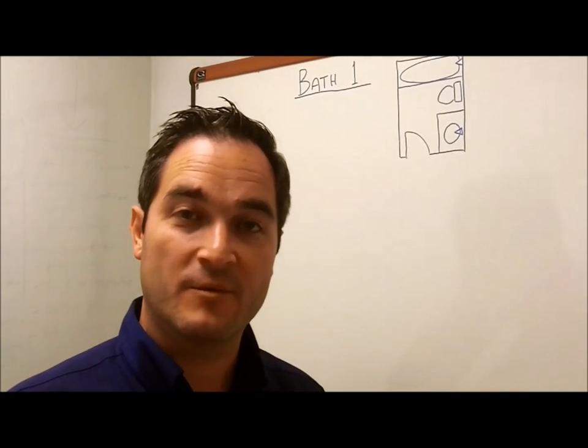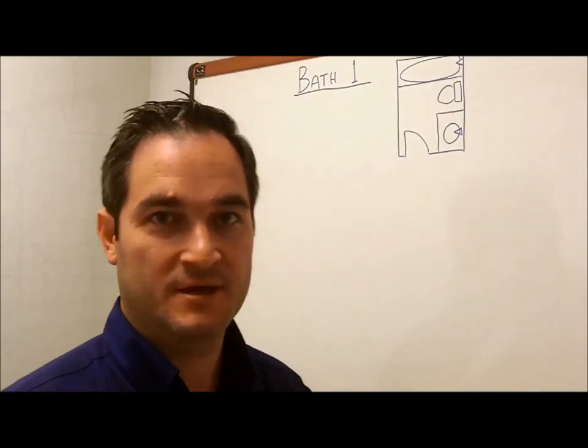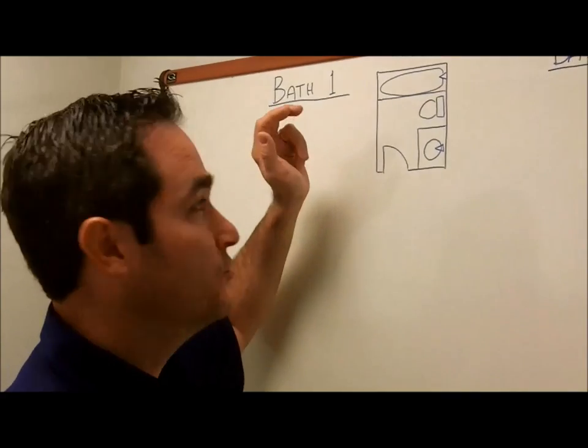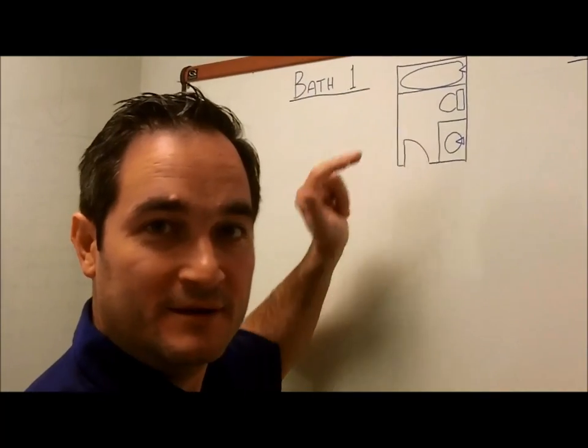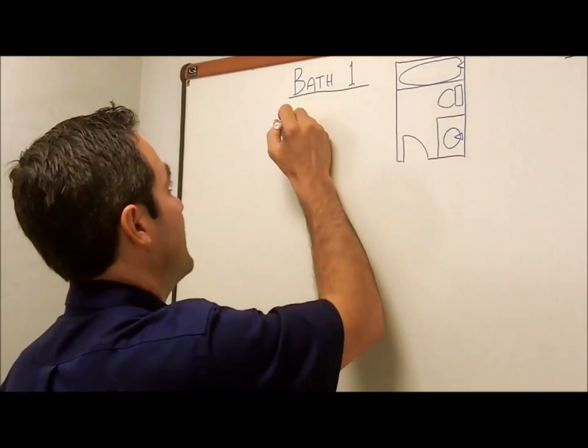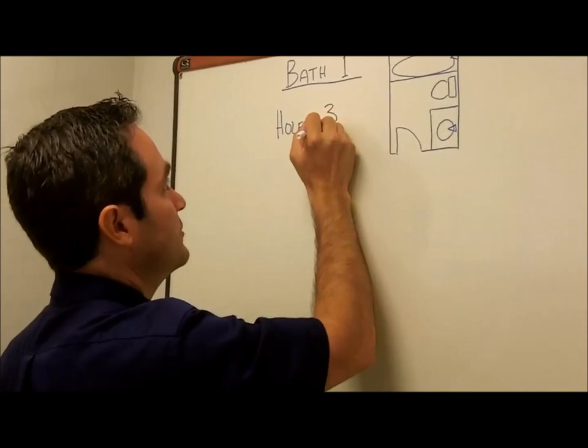What I want to do first is figure out the number of holes I have. And what I mean by holes are the number of fixtures. So here, what's pretty basic—this is about as small a bathroom as you can get—we've got a tub, a toilet, and a single vanity. Three holes.